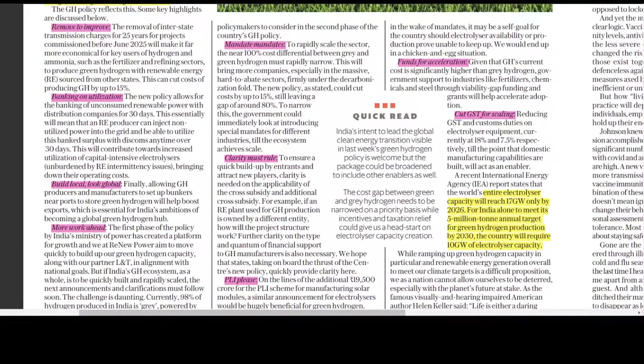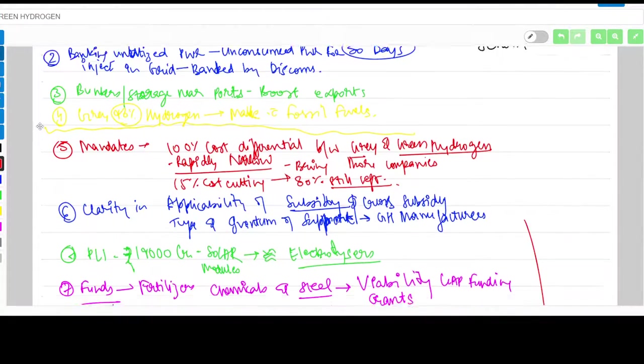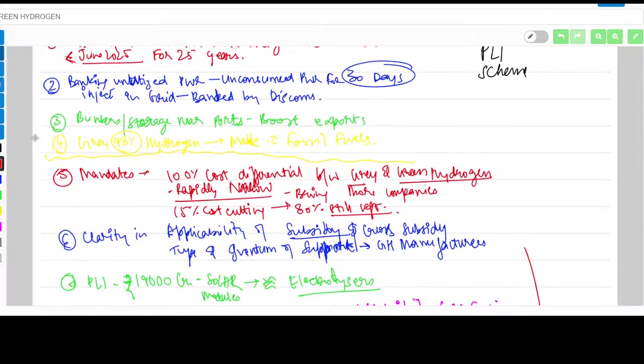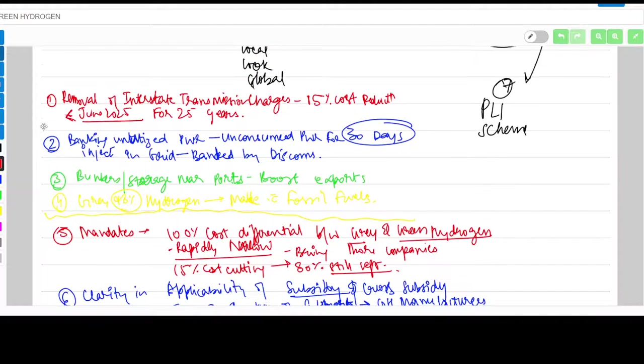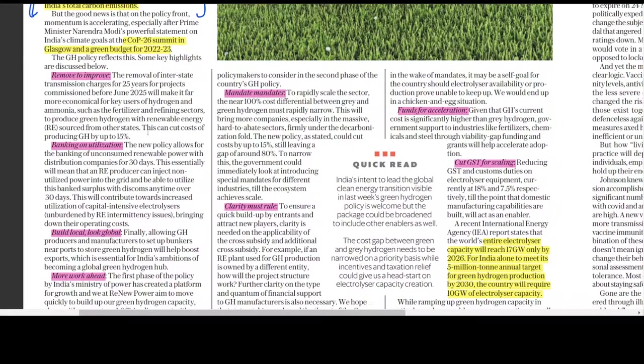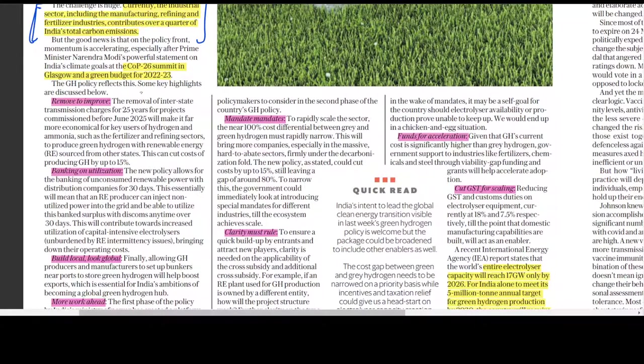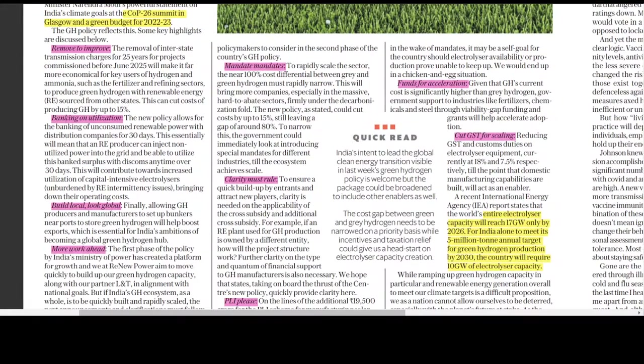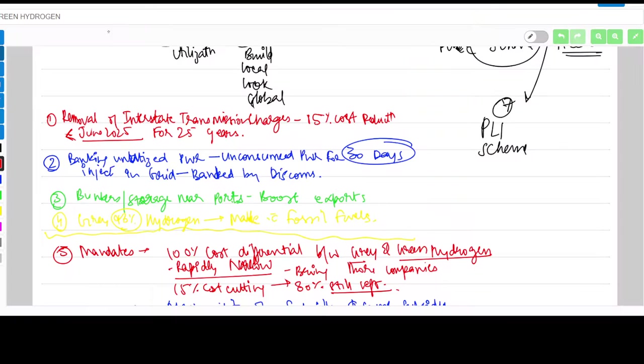There are about nine points in this article. The first four points tell you the current mandates or things discussed in the first policy or draft policy that has been made.